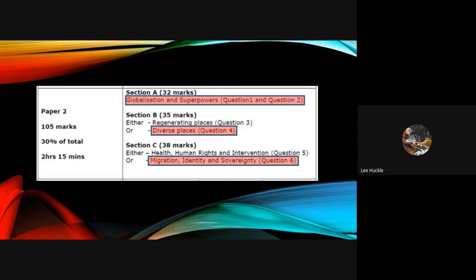Section C is worth 38 marks, so slightly more marks, but be careful again, you have an option of questions. Either question 5 which is health, human rights and intervention—we do not study that at Samuel Whitbread—but you must answer question 6 because you're at Samuel Whitbread and this is the unit we study: migration, identity and sovereignty.